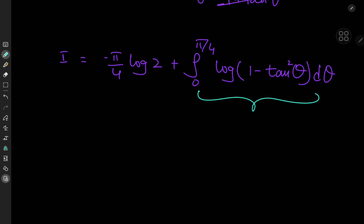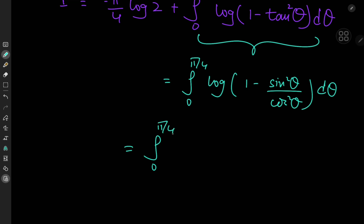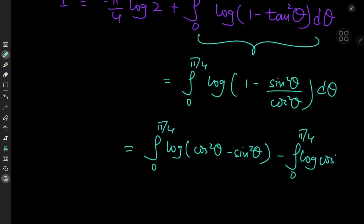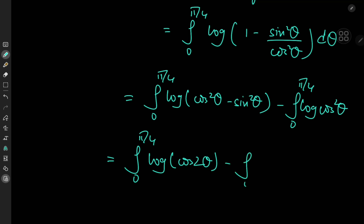This is a fascinating integral. We expand the tangent term: 1 minus tangent squared theta equals 1 minus sine squared theta over cosine squared theta. Using logarithm properties, we can write this as the integral from 0 to pi over 4 of log cosine squared theta minus sine squared theta, d theta, which splits into the integral from 0 to pi over 4 of log cosine 2 theta, d theta, minus 2 times the integral from 0 to pi over 4 of log cosine theta, d theta.